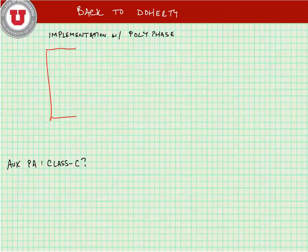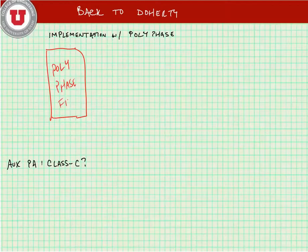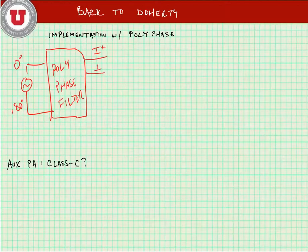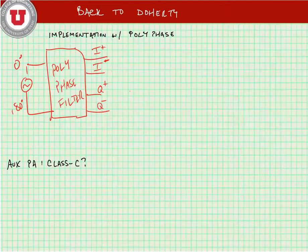We'll draw what that implementation looks like. Here's our polyphase filter. We have our original input signal, it's differential going into the filter. Out of that filter we get our I plus and I minus, and our Q plus and Q minus. We would have differential inputs to our auxiliary PA and to our main PA.